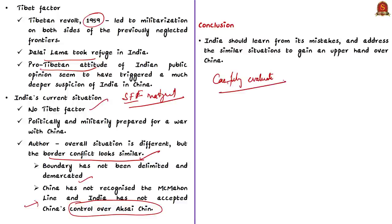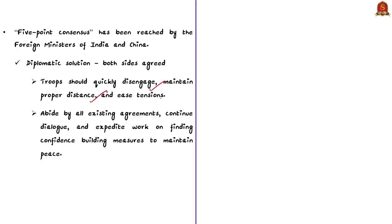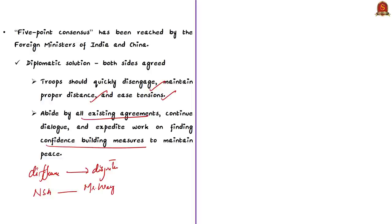There is also a news article regarding the five-point consensus reached by the foreign ministers of India and China. Yesterday, the foreign ministers met during the RIC meeting and reached a five-point consensus on border clashes. It is a diplomatic solution under which both sides agree that troops should disengage, maintain proper distance, and ease tensions. The five-point plan follows the consensus between PM Modi and Xi Jinping to not allow differences to become disputes.